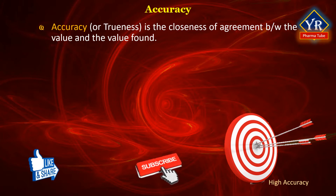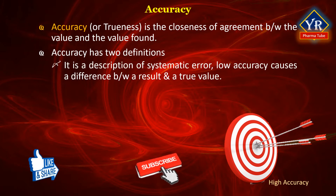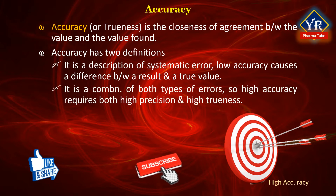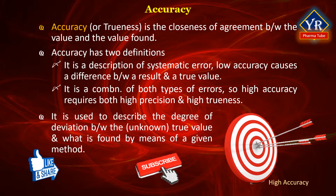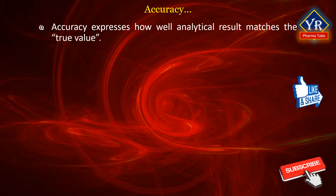Accuracy considers systematic and random errors associated with the analysis. More commonly, accuracy is a description of systematic errors or a measure of statistical bias. Low accuracy causes a difference between a result and a true value. Alternatively, accuracy describes a combination of both types of observational error — that is, random and systematic errors — so high accuracy requires both high precision and high trueness. Accuracy is the term used to describe the degree of deviation, that is bias, between the unknown true value and what is found by means of a given analytical method. In other words, it is a measure of how closely the result of an experiment agrees with the expected result. Thus, accuracy expresses how well the analytical result matches the true value.